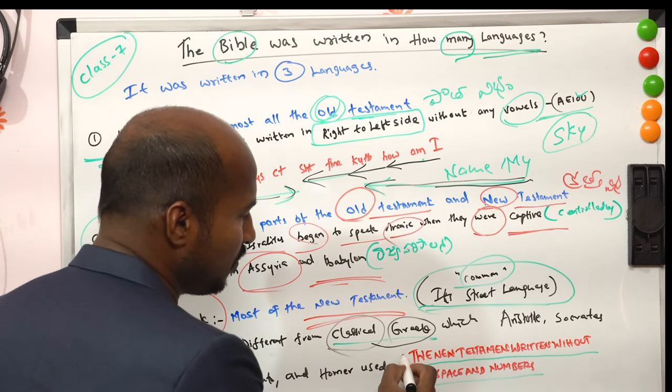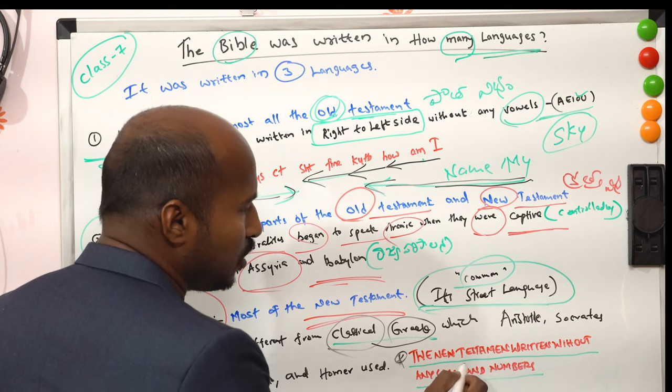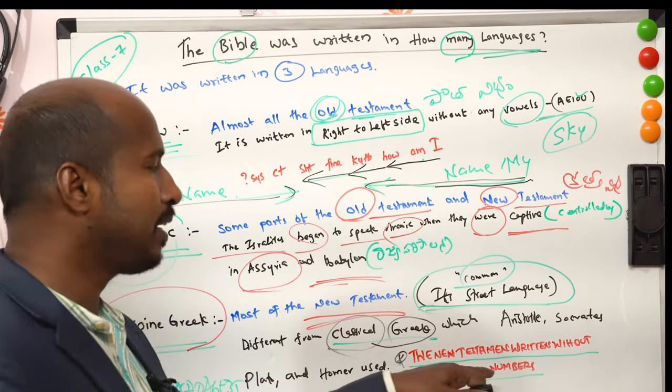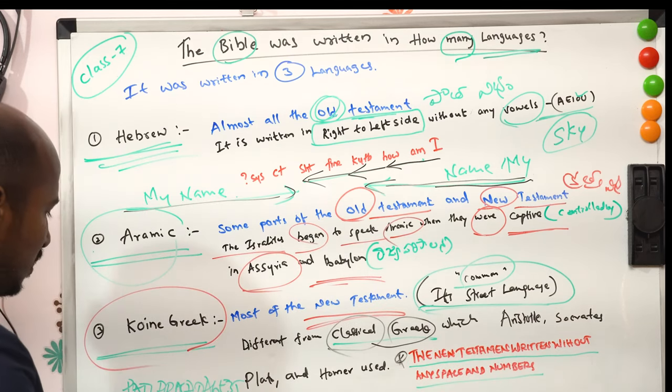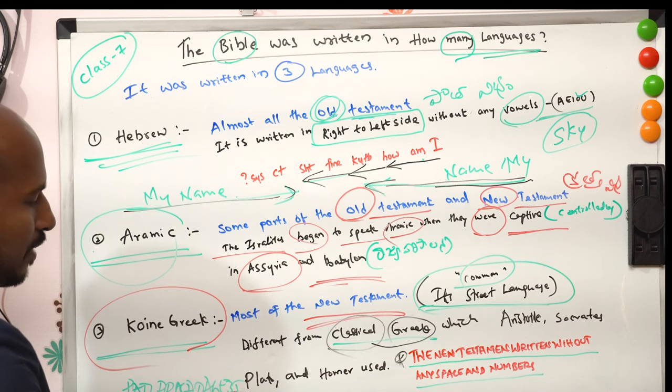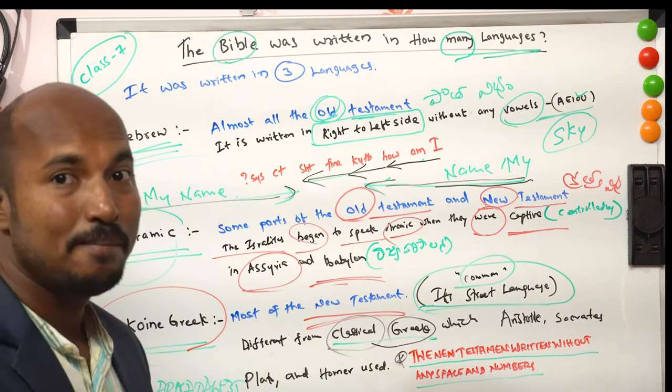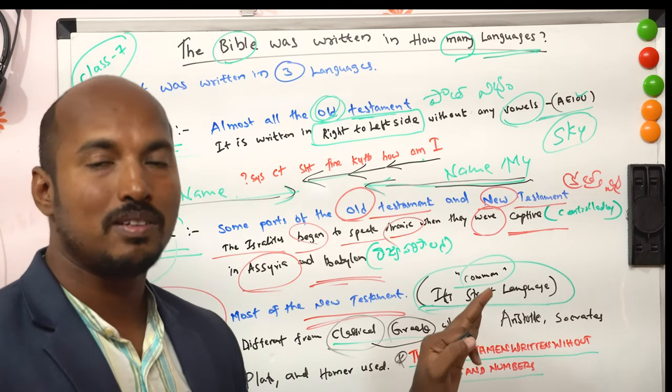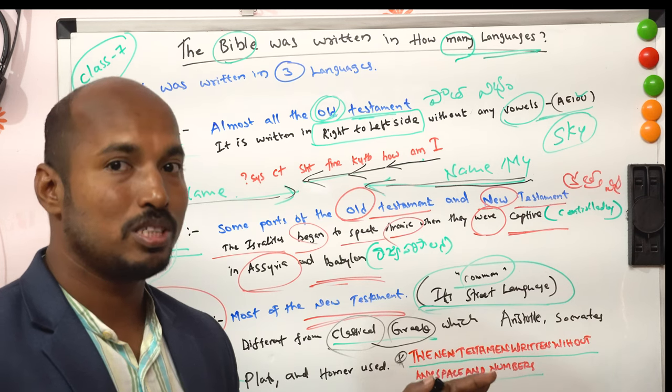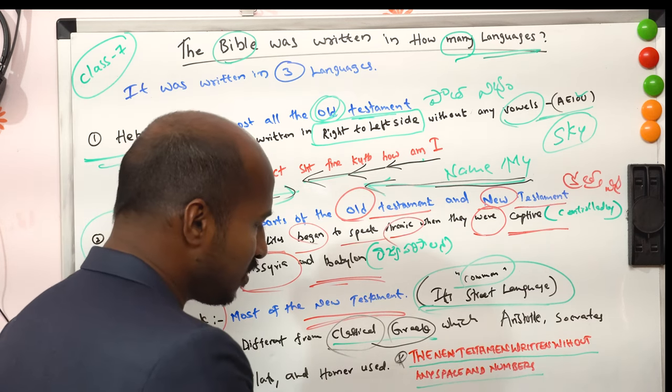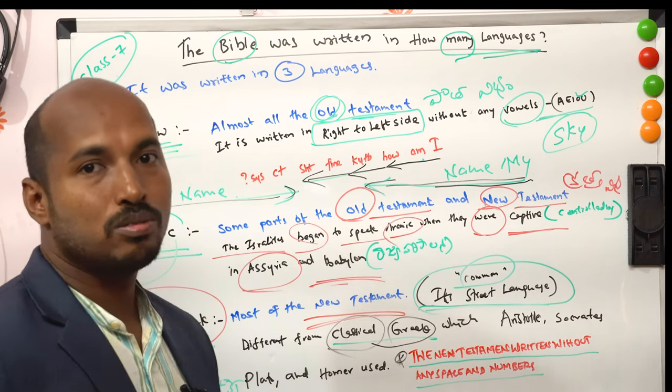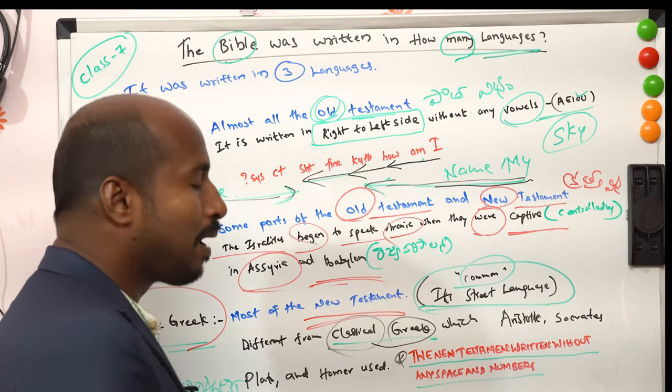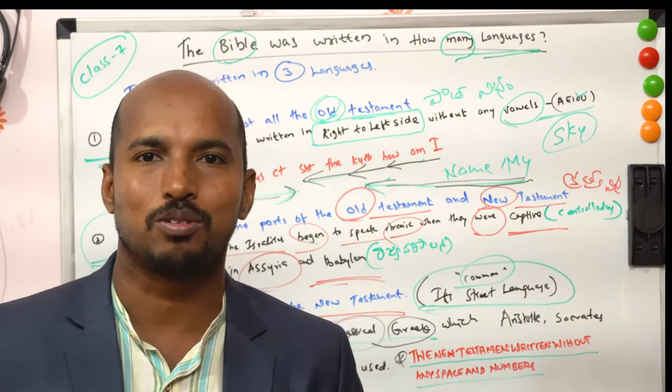For example, here I am going to read the book. The New Testament is written without any space and numbers. We don't have space, we don't have numbers. But after this book, there are a lot of people in the Bible. Now we don't have space, plus numbers. That is, Pastors, believers, Bible scholars. So this is all about today.